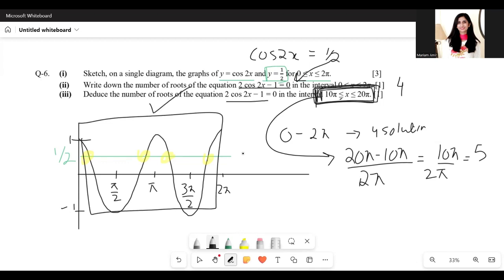And in each one cycle, we have four roots. So in five such cycles, we'll have 4 times 5, which is 20 roots.